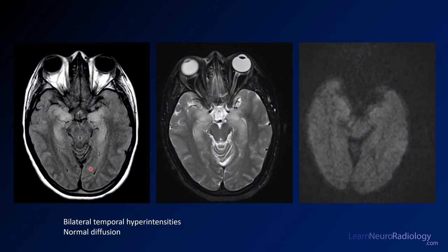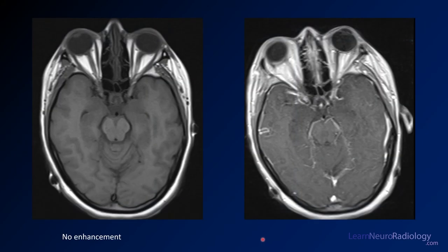To review these imaging findings: there are bilateral temporal hyperintensities on FLAIR, normal diffusion, just a little bit swollen and a little bit too bright, with really no enhancement.